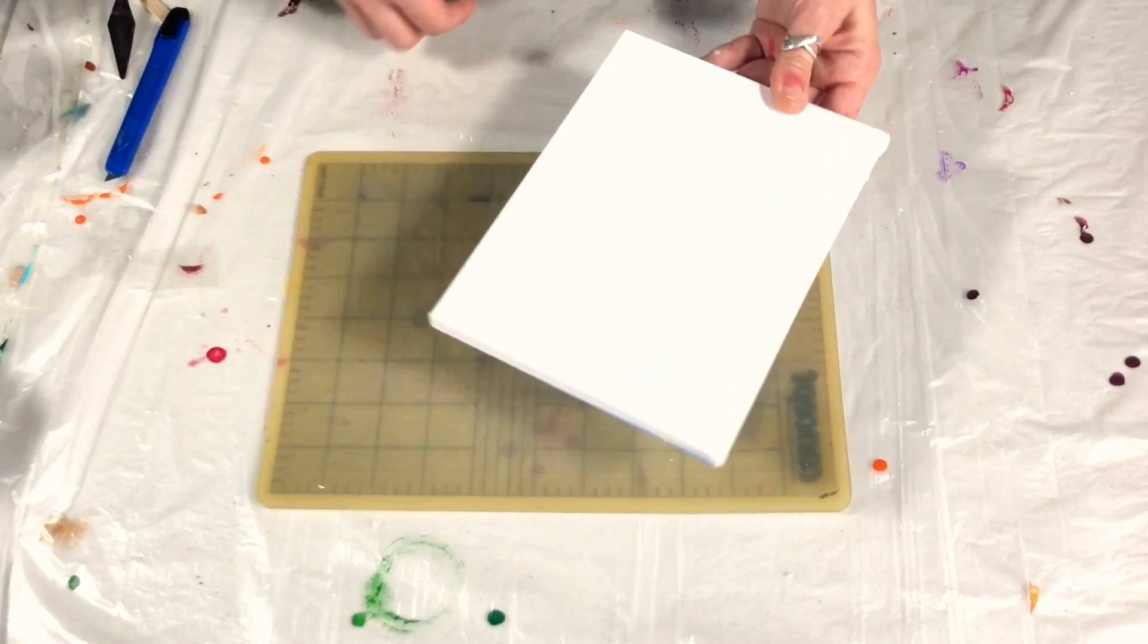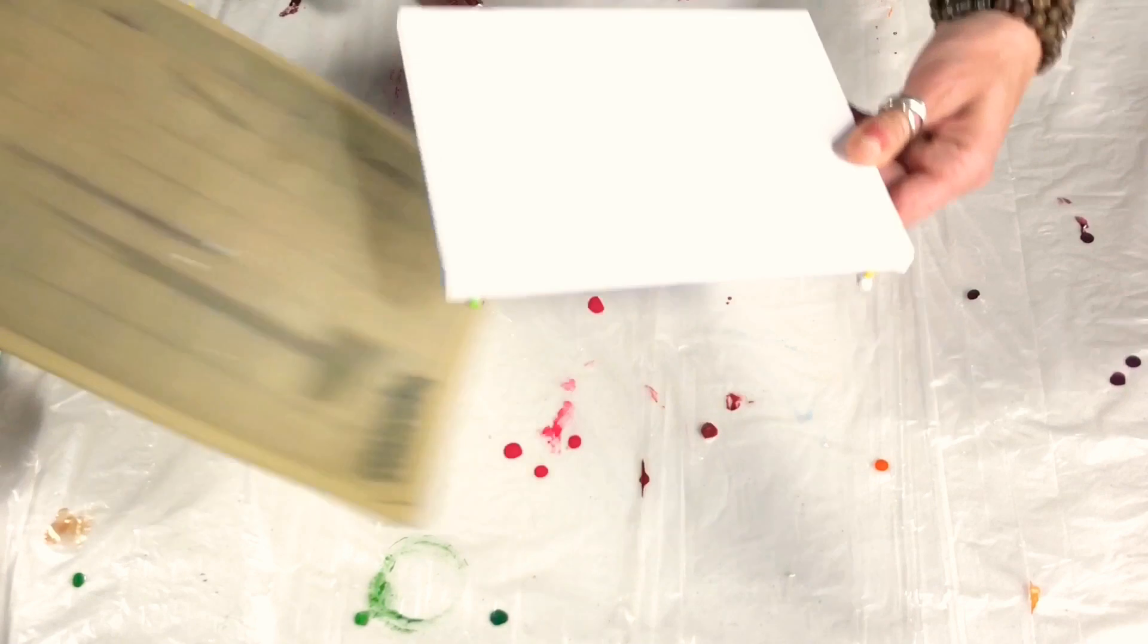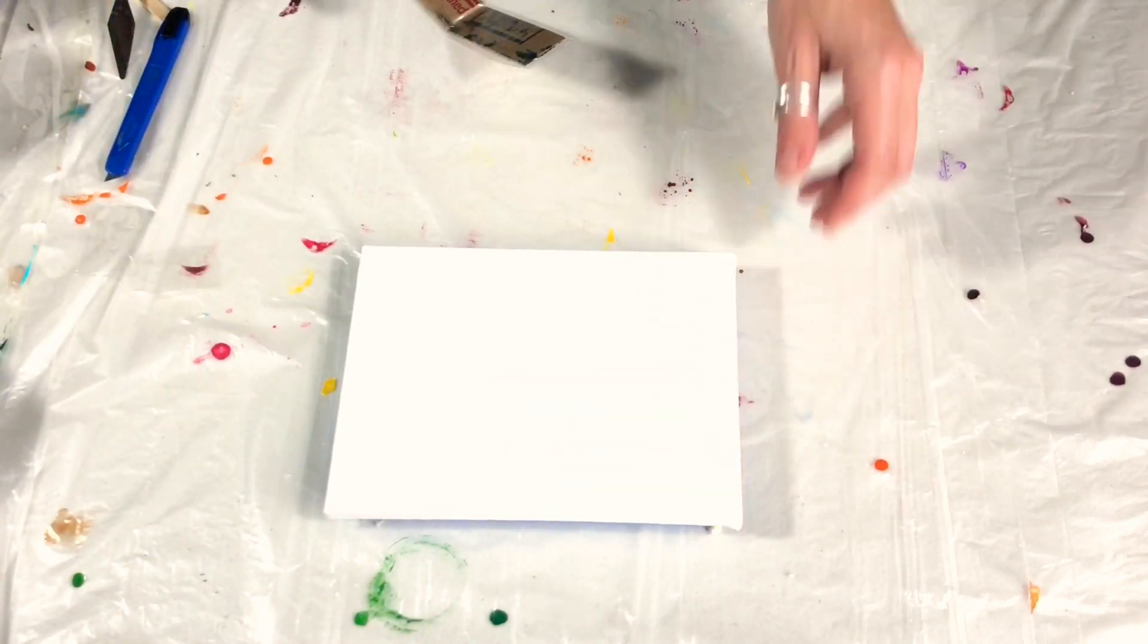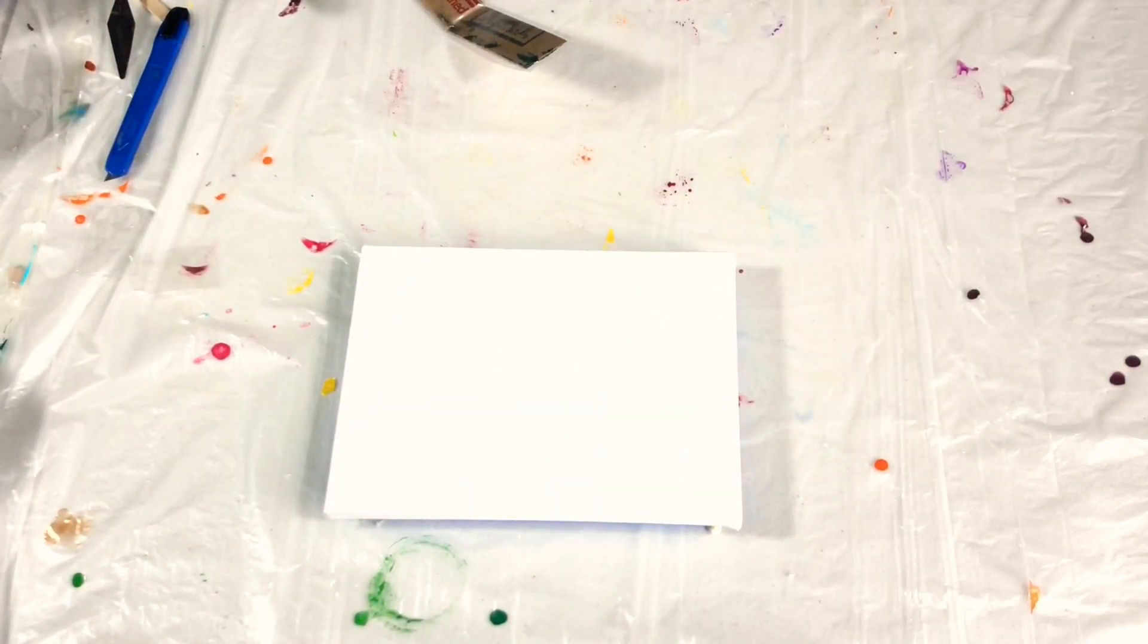So technically what you do is when you're pouring you just kind of wrap it around the corners. So let's give it a shot. I'm gonna just pour this canvas with a solid color for simplicity just to kind of show you how this works.